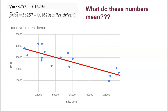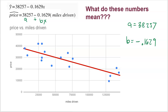We go in alphabetical order: a plus bx. So right away, a — the y-intercept — is the 38,257, and b is negative 0.1629. I know which is the y-intercept and which is the slope, but again, what do they mean? What do they represent?